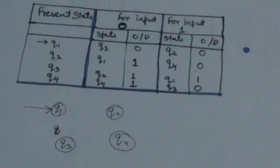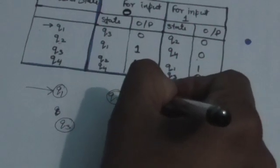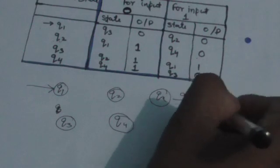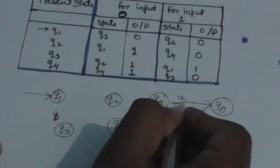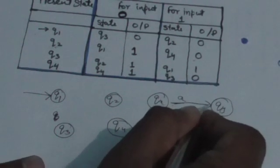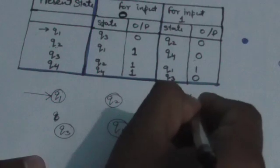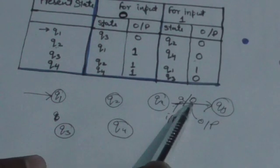Arrows will be labeled by the input symbol as well as the output symbol. Suppose the machine is in state Qx and on reading input symbol A it jumps to state Qy and gives output 0. We will label the arrow representing that transition as input slash output — here A is the input and 0 is the output. This means when the machine is in Qx and reads A, it jumps to Qy and gives 0 as output.